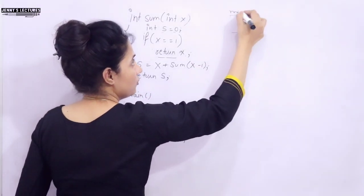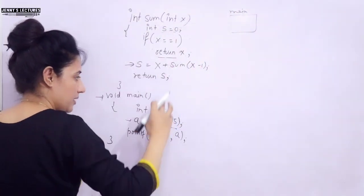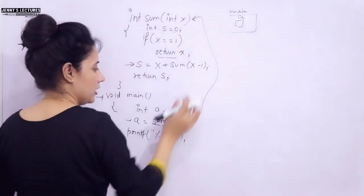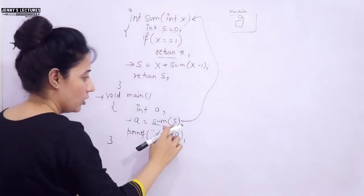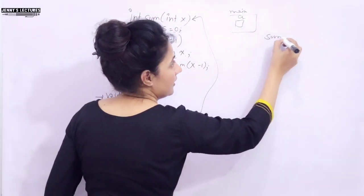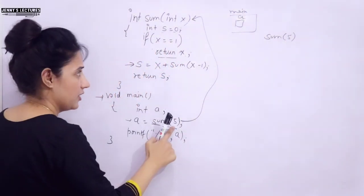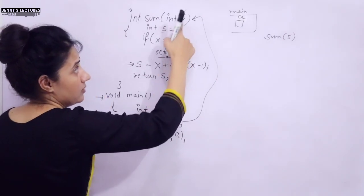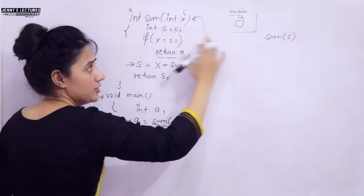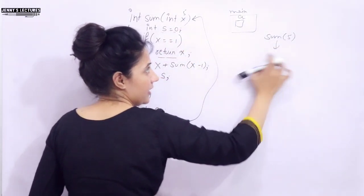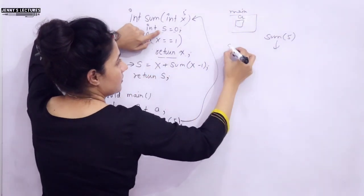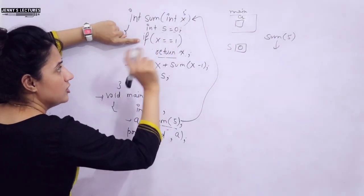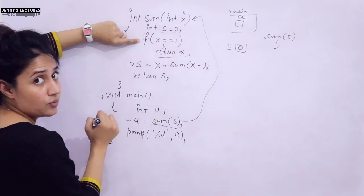First, one stack frame is allocated for the main function. Here we have variable a. We call sum(5), so control goes to the function definition. We pass 5, so x becomes 5. We have s = 0. Now we check: if x == 1, this condition is not true, so we don't enter the if block. Without curly braces, only the one statement after if — return x — is part of that if block.